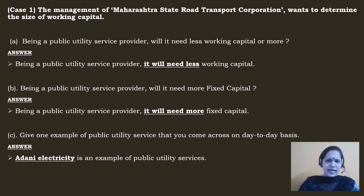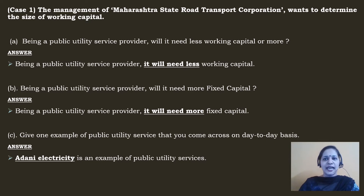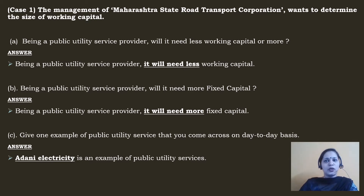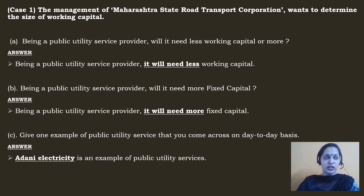For example, electricity, gas, power, and water supply all come under Public Utility Service Providers. These people don't need more working capital because every month the billing cycle comes and customers pay them. They need cash or cash equivalents only at a minimum level. Their infrastructure and fixed assets — machineries and all — are more significant than their working capital needs.